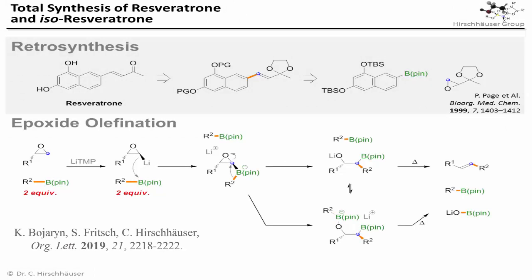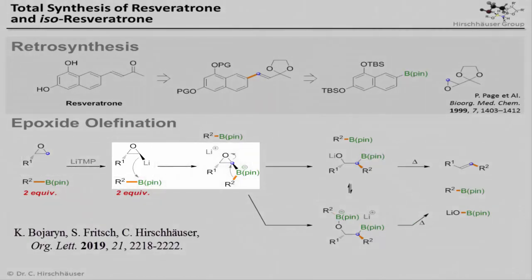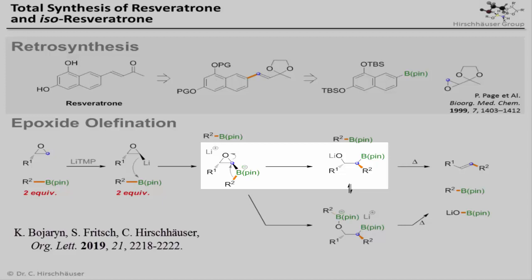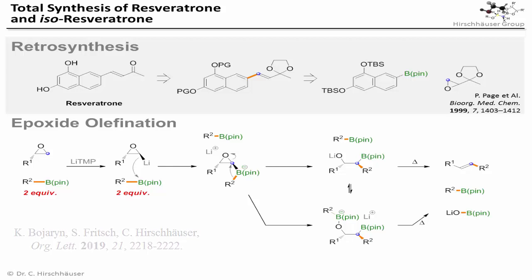This olefination, which was published by us in 2019, relies on the lithiation of an epoxide and subsequent formation of a ate-complex with a boronate. The ate-complex can then undergo a Matteson-type 1,2 rearrangement, which delivers a beta-alkoxyboronate, which then undergoes a syn-elimination upon heating. The nice thing about this chemistry is that the resulting alkene could be turned back into an epoxide again, so that it can be applied iteratively.